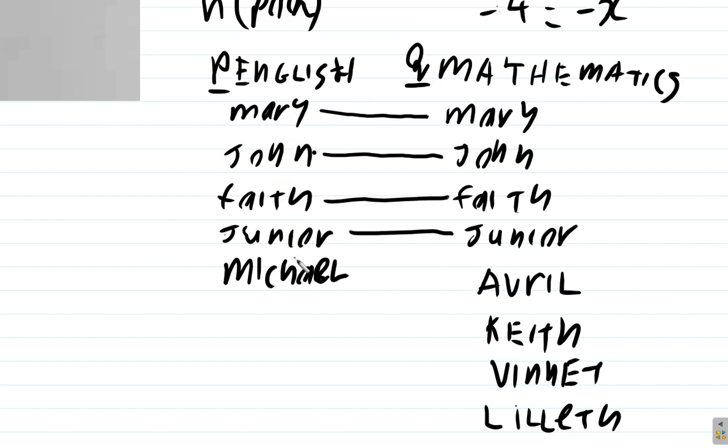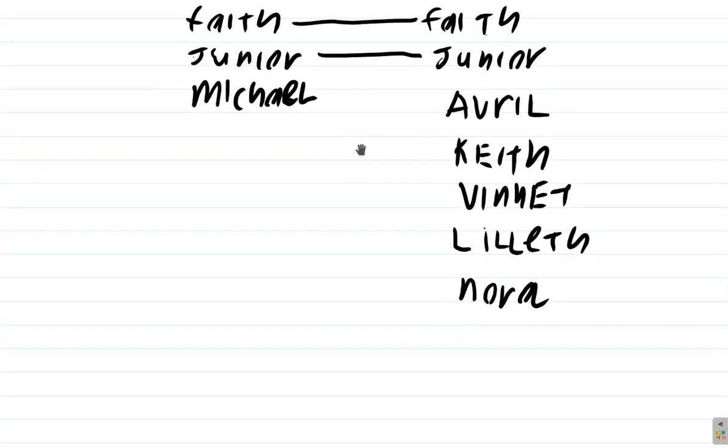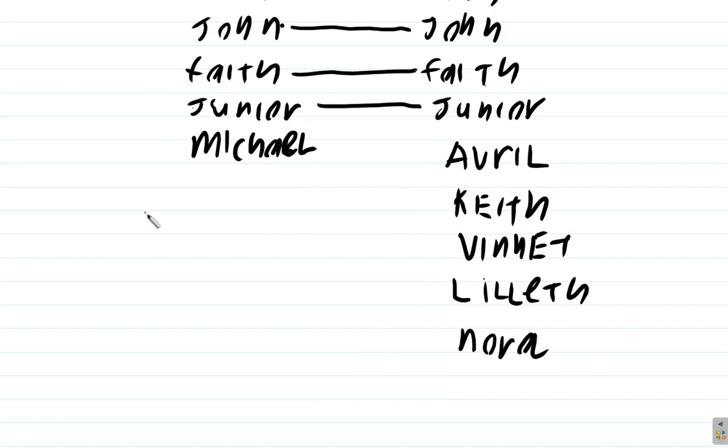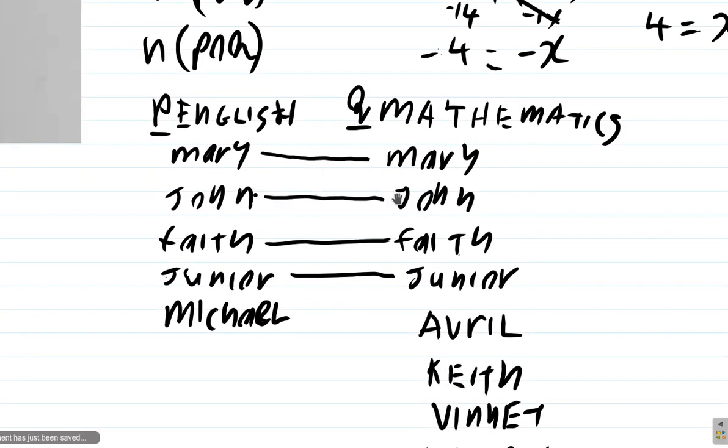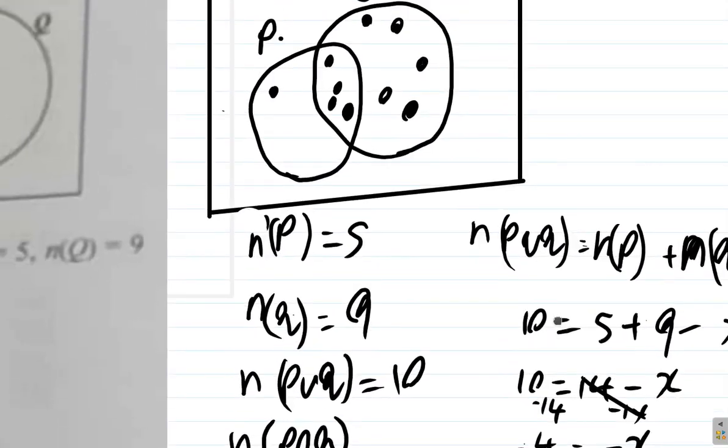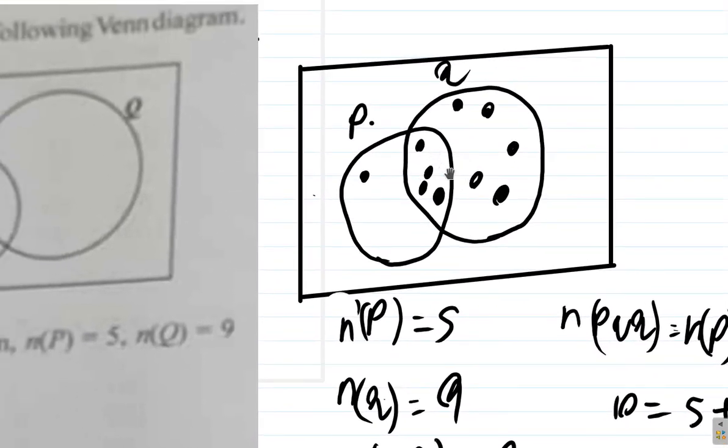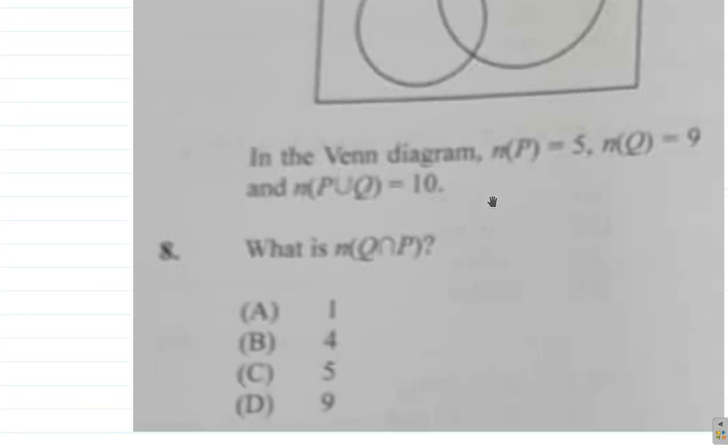So if you consider that now, you say 1, 2, 3, 4, 5. But hold on, I saw Mary already. John is there already. Faith is there already. It's the same person, John. So I have to start counting from Avril going down. We had 5, then we say 6, 7, 8, 9, 10. So the union is 10 because 4 are in both classes at the same time. 4 are in both P and Q at the same time. So the answer to question 8 is 4, B.